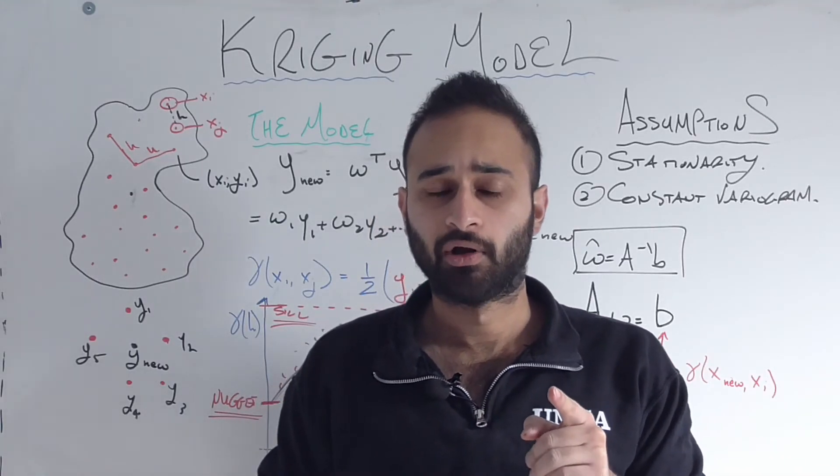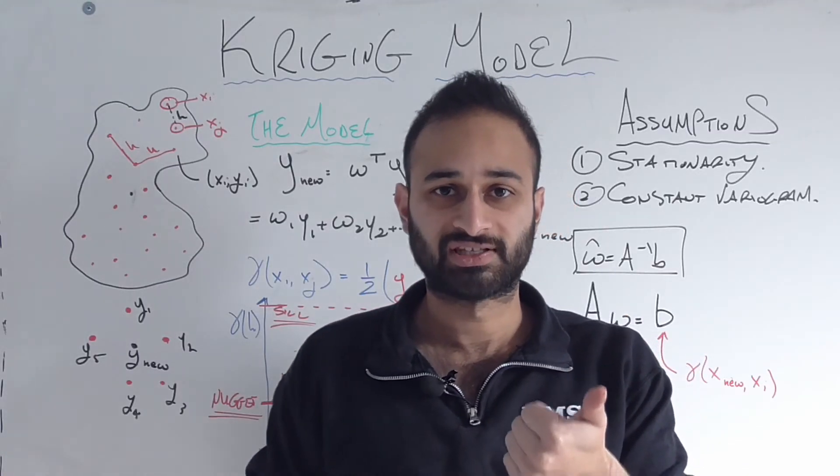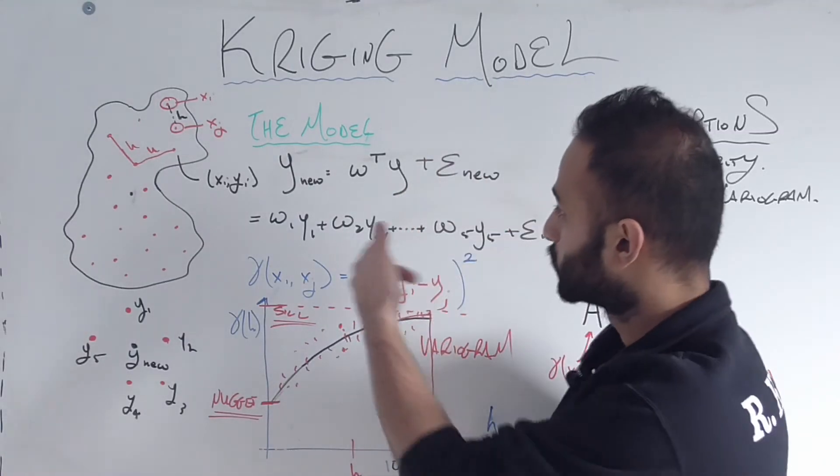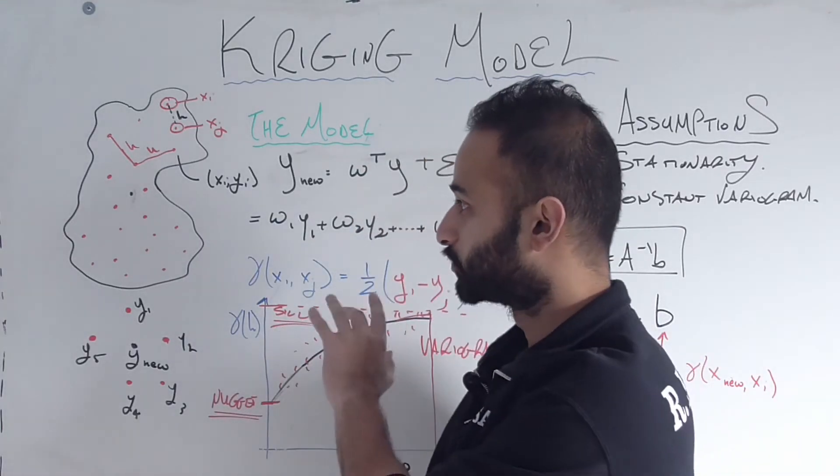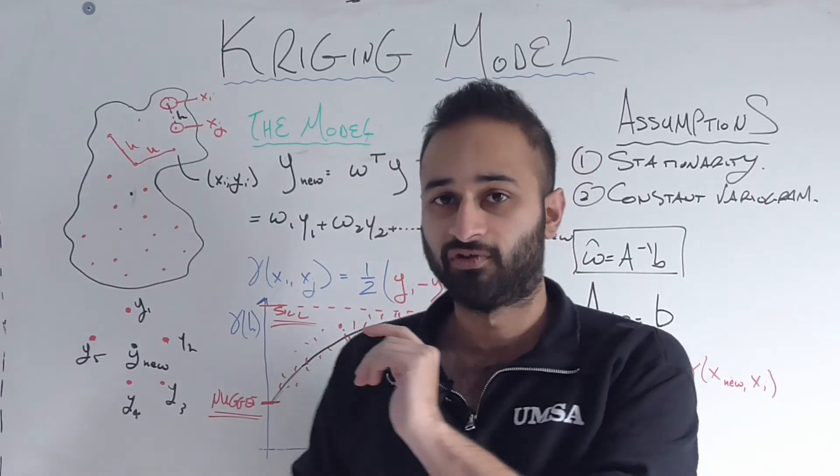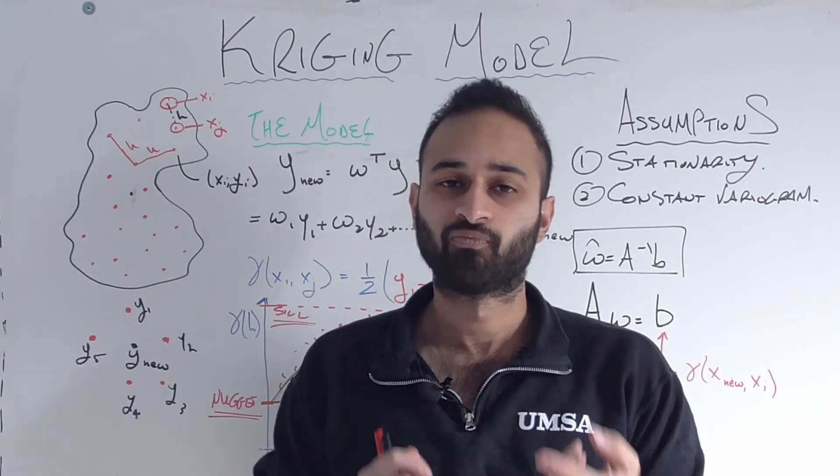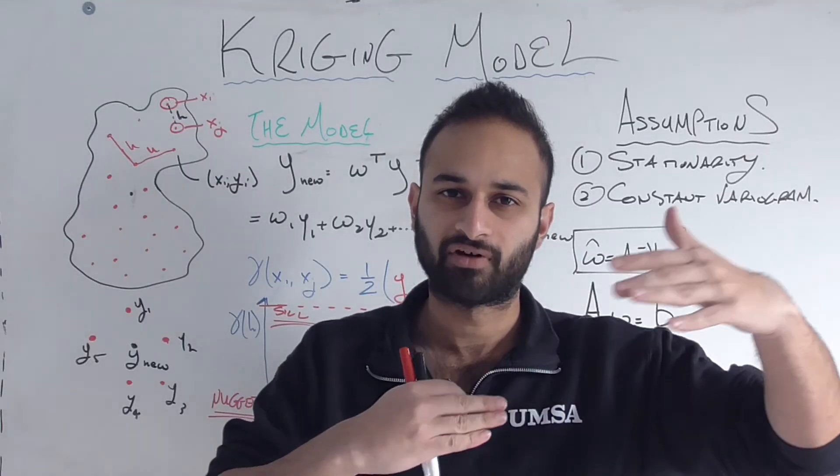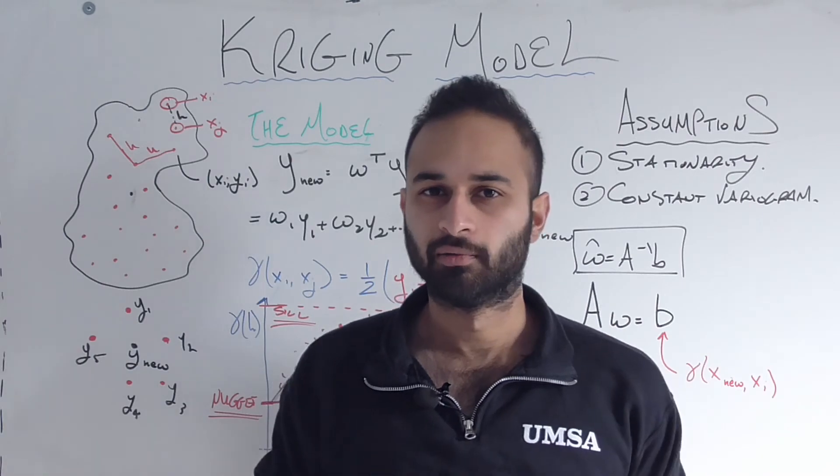And actually, the last thing I want to do is talk about the pros and cons of the Kriging model. First, one of the biggest pros is that the Kriging model gives us not just an estimate of like elevation at a certain point, but it also has a built-in feature, which we didn't talk about, but it has a built-in feature that gives you the error at that point. So you can say that this is my prediction, and this is on average how off I think I am. So it gives you this nice error built into the model.